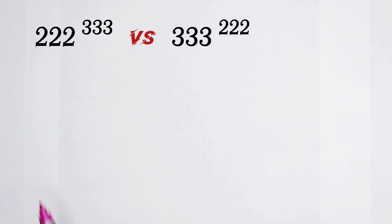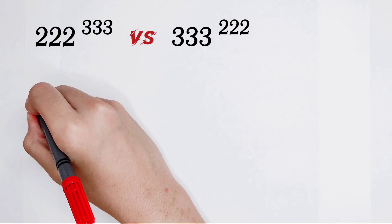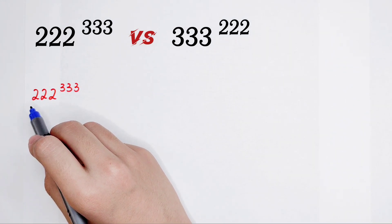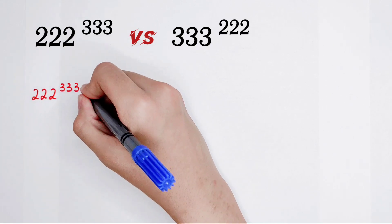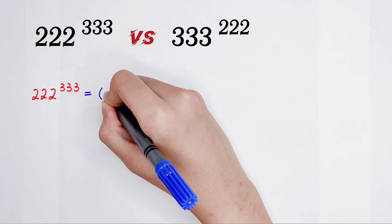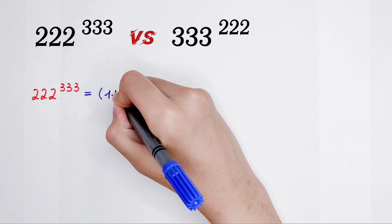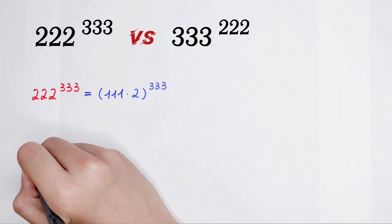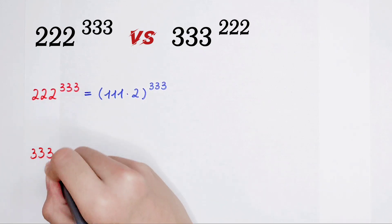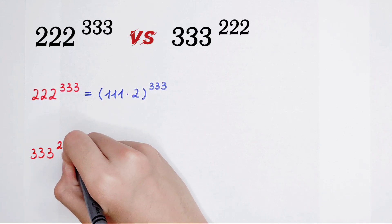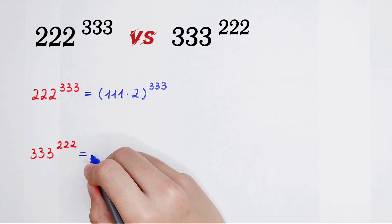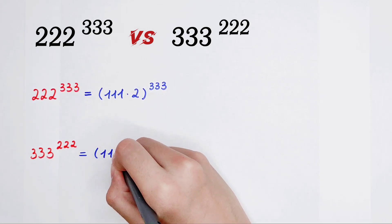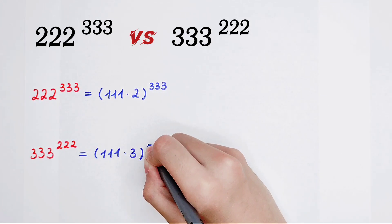Now we do some changes on the bases. Pay attention: 222 to the power of 333 — because 222 is an integral multiple of 111, it can be written as 111 times 2, then to the power of 333. Similarly, 333 to the power of 222 — since 333 is also an integral multiple of 111 — it's 111 times 3, then to the power of 222.